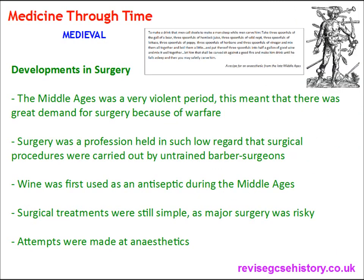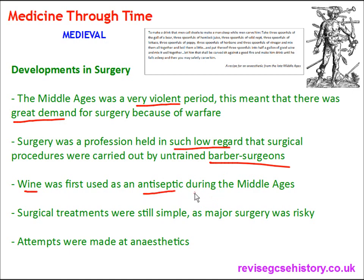Development in surgery. The Middle Ages was a very violent period, which meant there was a great demand for surgery because of warfare. Surgery was a profession held in such low regard that surgical procedures were often carried out by untrained barber surgeons — the local barber who also cut people's hair. Wine was first used as an antiseptic during the Middle Ages, and surgical treatments were still simple as major surgery was risky, but attempts were made at anaesthetics.